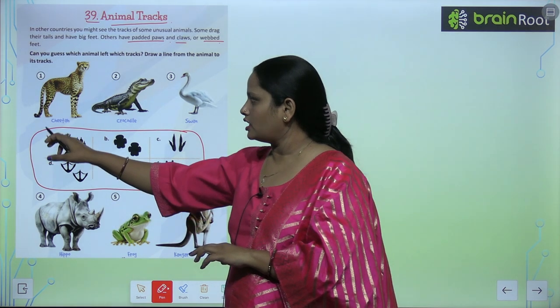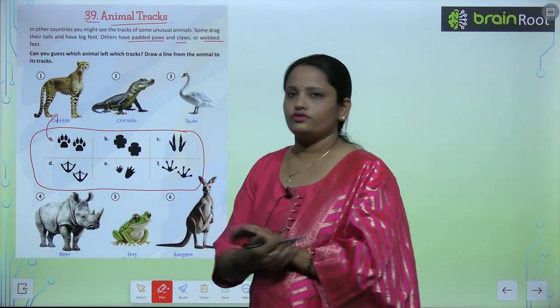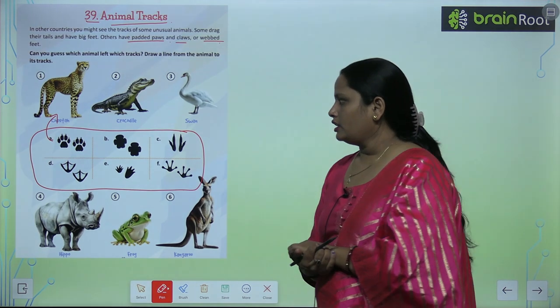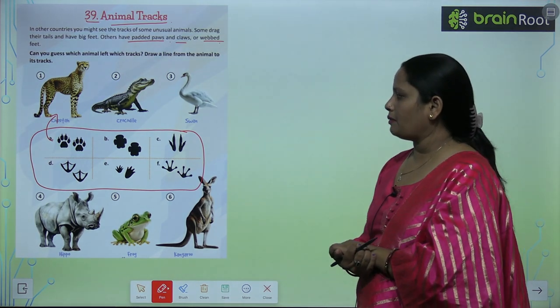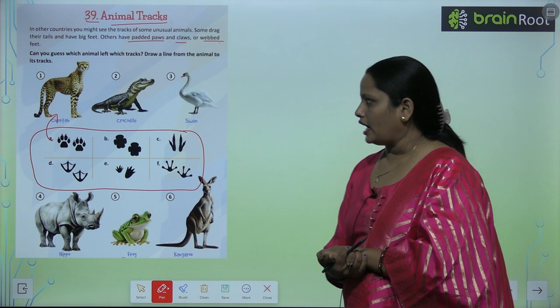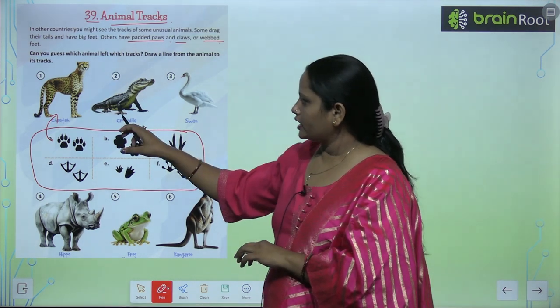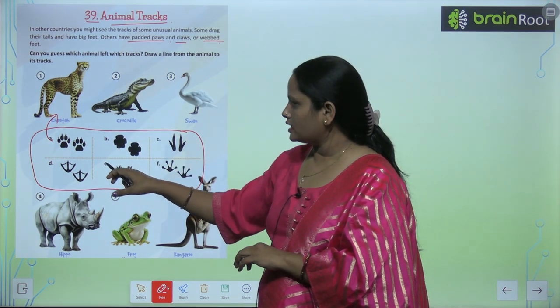And yes this is the leg of cheetah. Now second animal here is our crocodile. And crocodile, can you see how you can see it? It looks like this. Like E.